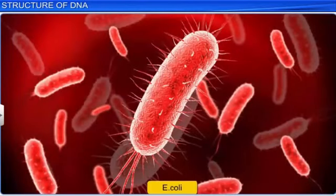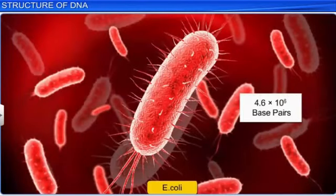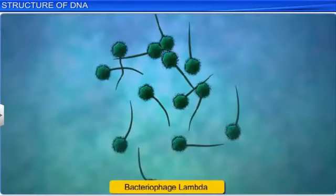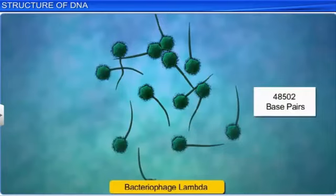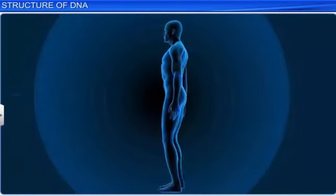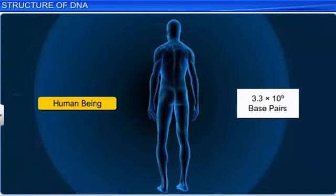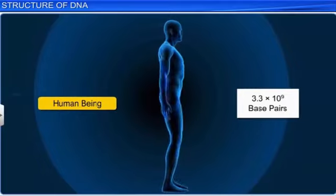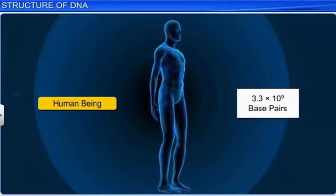For example, E. coli has 4.6 × 10⁶ base pairs, and bacteriophage lambda has 48,502 base pairs, while the haploid content of human DNA has 3.3 × 10⁹ base pairs.